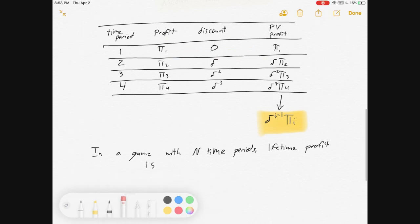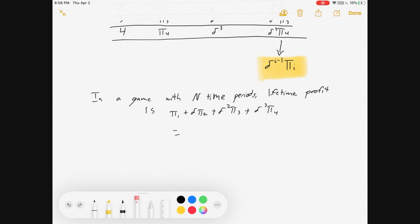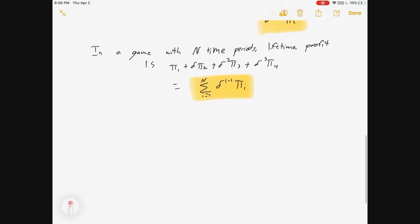Now, in a game with n time periods, lifetime profit is pi 1, today's payoff, plus discounted tomorrow's payoff, plus discounted the next day's payoff, and so on, which is sum from i equals 1 to n times delta to the i minus 1 times pi i. That will add all of the present valued profits for the entire game.